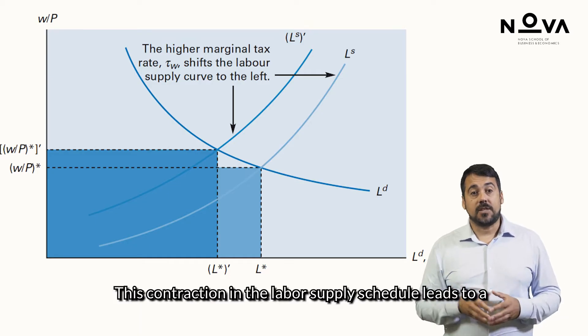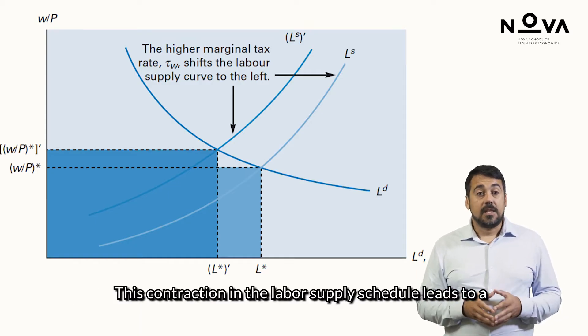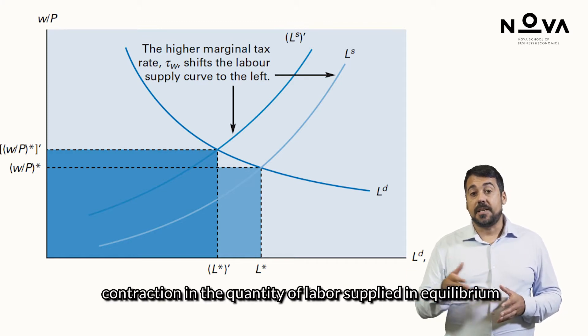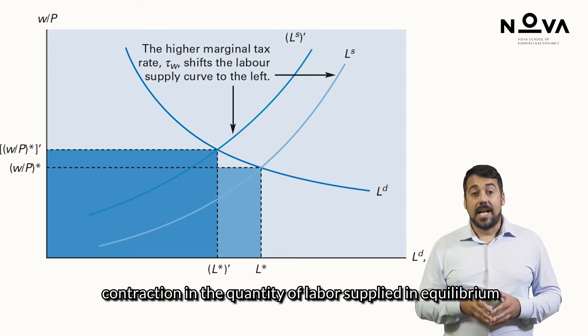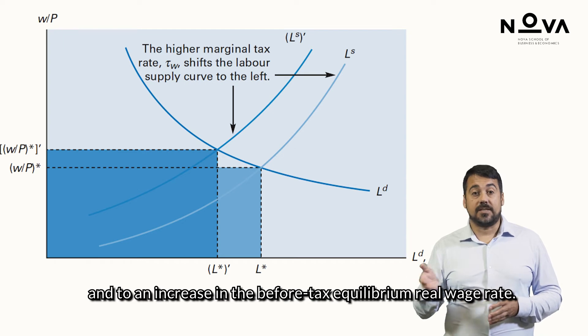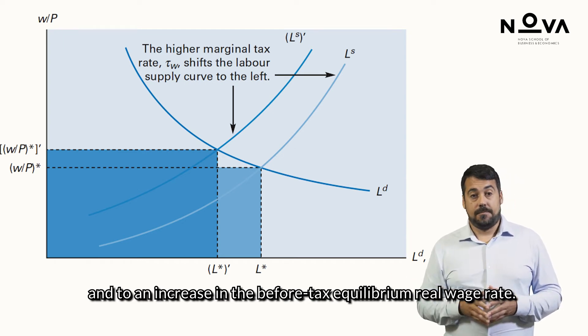This contraction in the labour supply schedule leads to a reduction in the quantity of labour supplied in equilibrium, and to an increase in the before-tax equilibrium real wage.